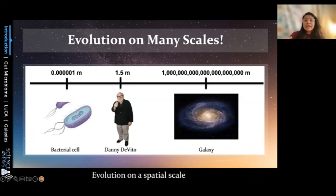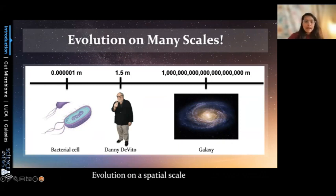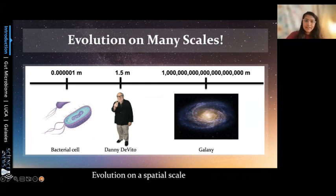We also have a size scale — a spatial scale. Nora's talk discusses bacterial cells, which are much smaller than a single strand of hair. Zooming out, Krishan's talk covers slightly larger species: birds, crocodiles, other mammals. And zooming out even further, Harrison will talk about massive stars and galaxies — very different from a bacterial cell. So our talk covers both time and space in terms of evolution.